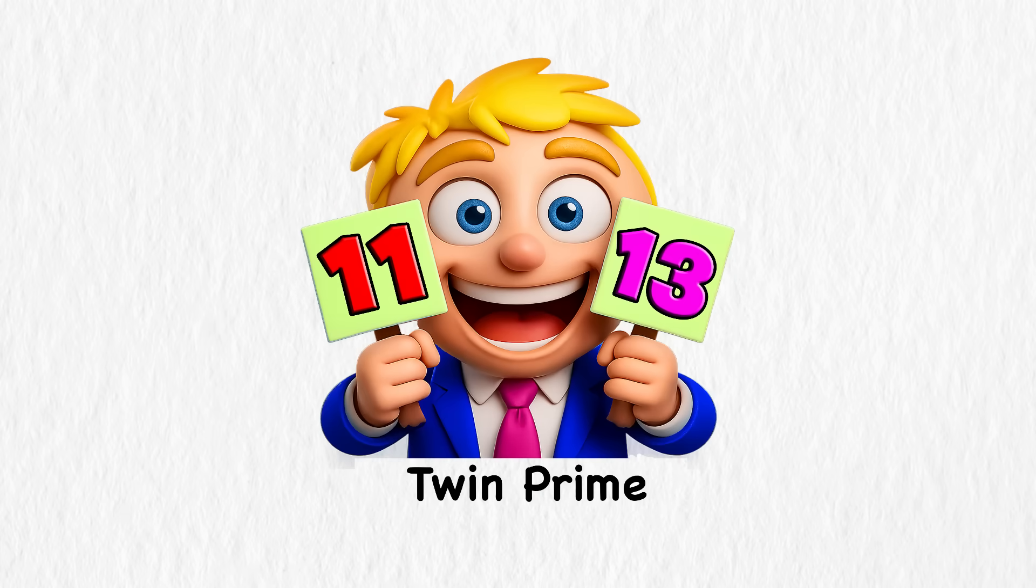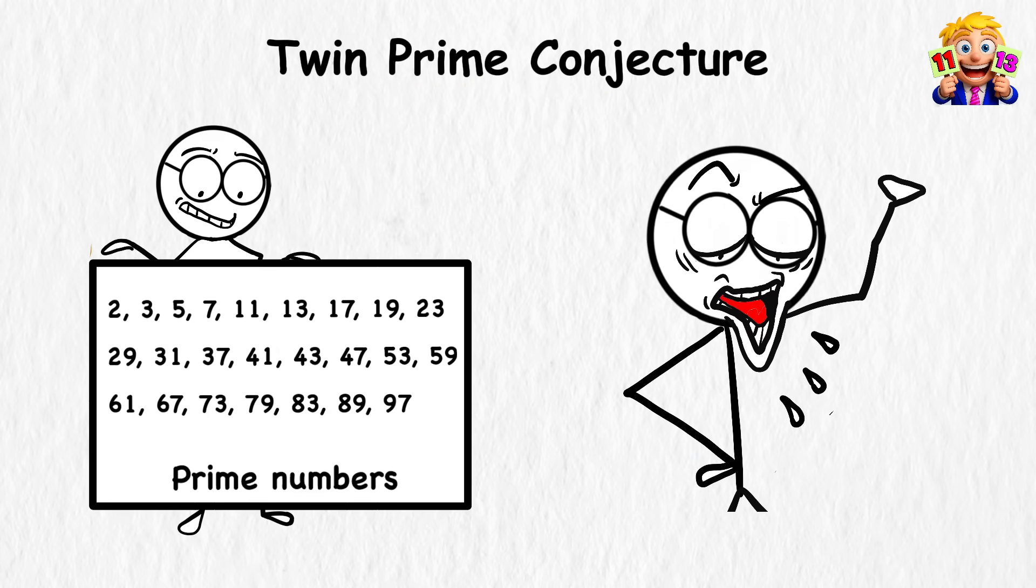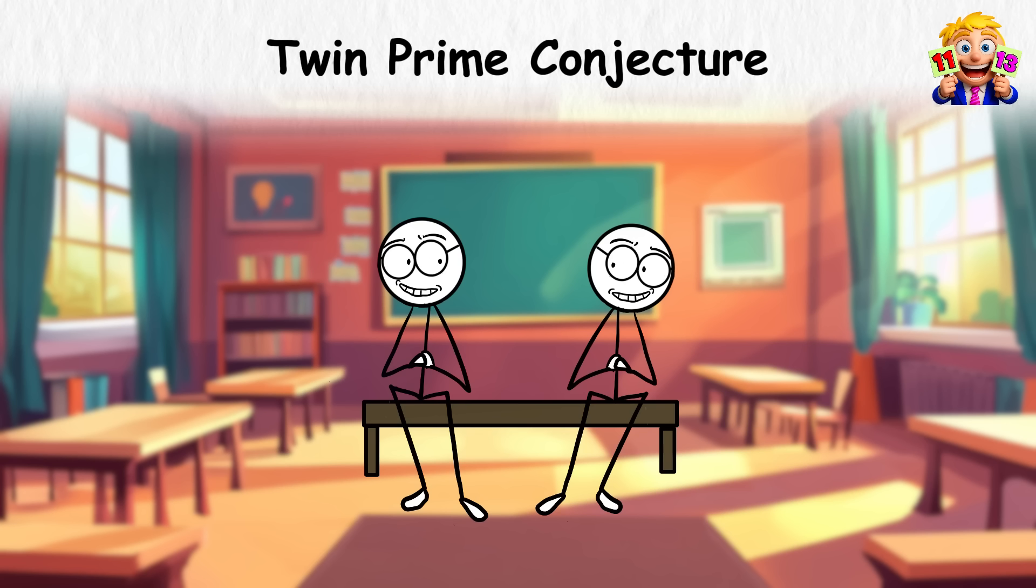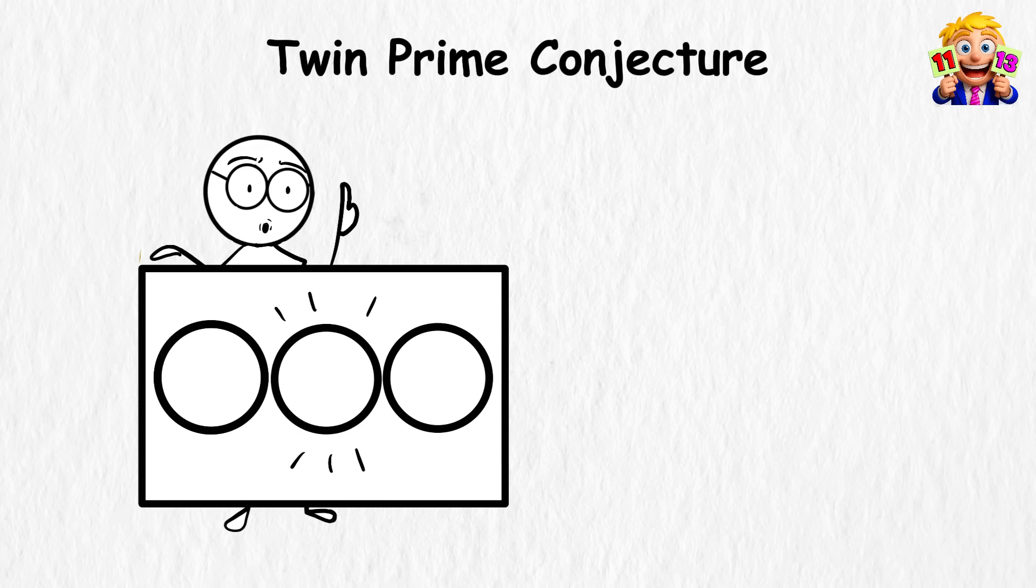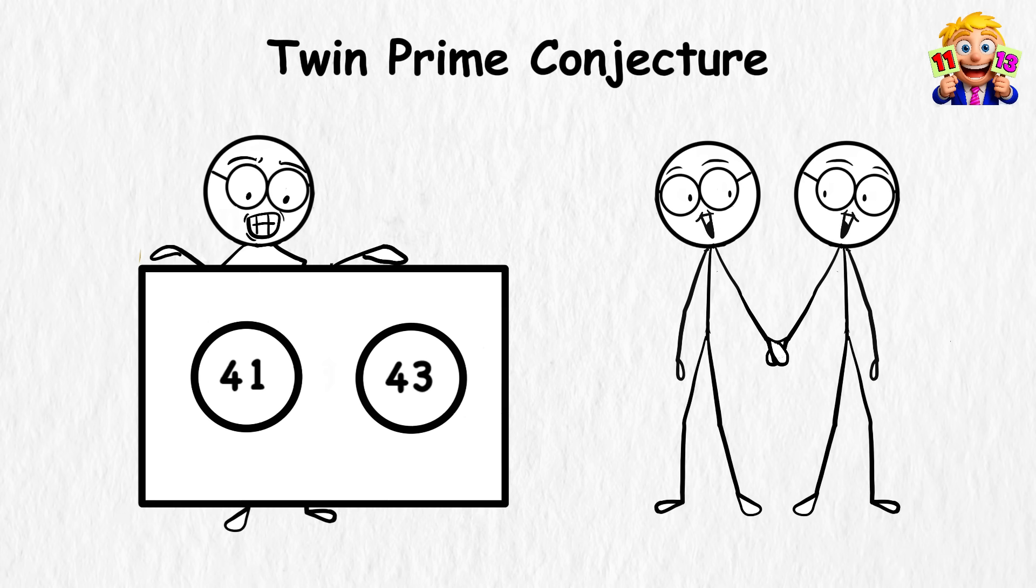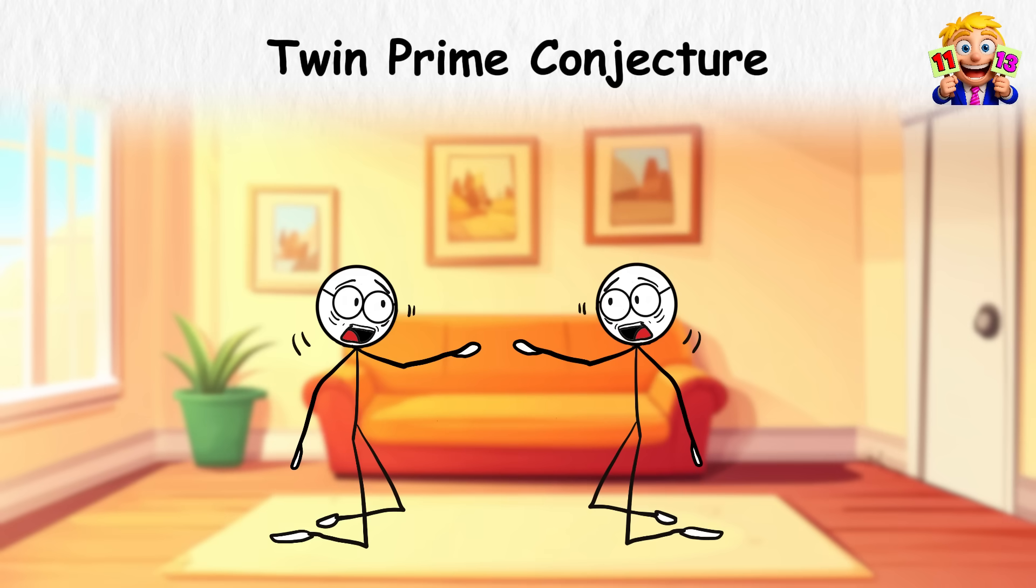Twin Prime Conjecture. Prime numbers are already strange, but twin primes take that weirdness to another level. A twin prime is just two prime numbers that sit right next to each other, with only one number in between. 11 and 13 are twins, so are 41 and 43. They're like siblings who refuse to live far apart.